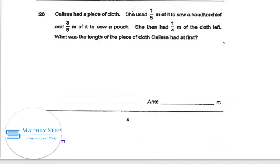Question 26. Kalisha had a piece of cloth. She used one-fifth meter of it to sew a handkerchief and three-fifth meter of it to sew a pouch. She then had one-quarter meter of the cloth left. What was the length of the piece of cloth Kalisha had at first? We just need to add all of this together.